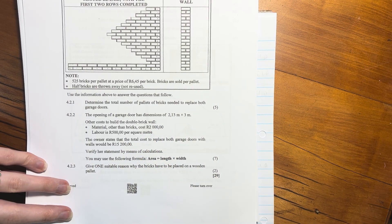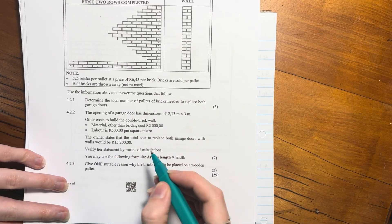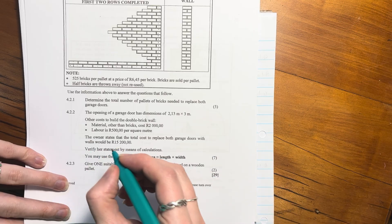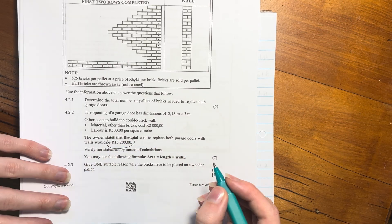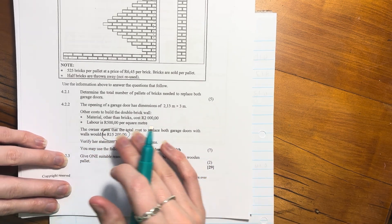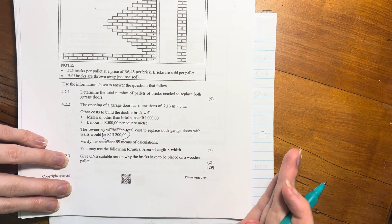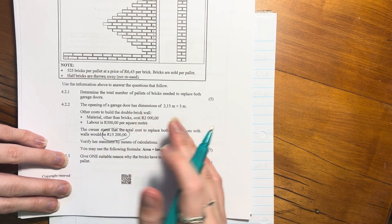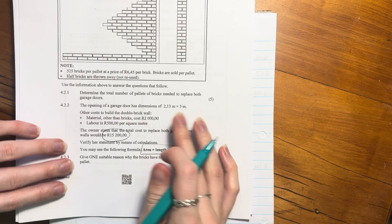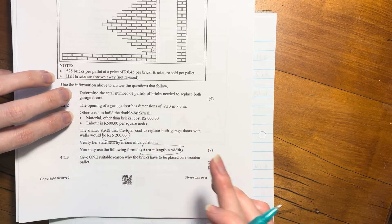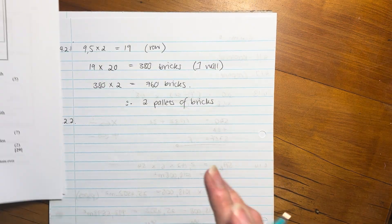We're going to have to work out how many square meters there are and then times that by 500 to see how much labor we're going to need. The owner states that the total cost to replace both garage doors with walls would be 15,200 rand. We have one of these classic math questions: verify her statement.